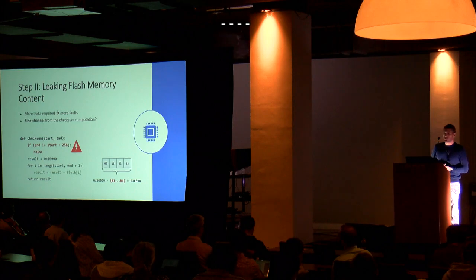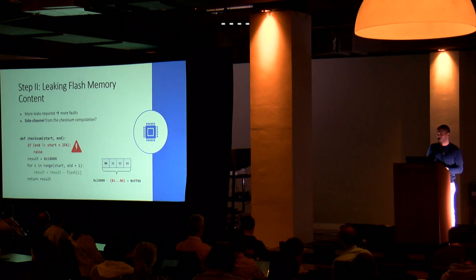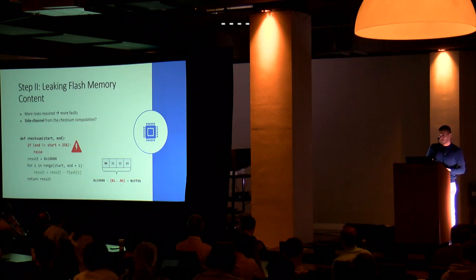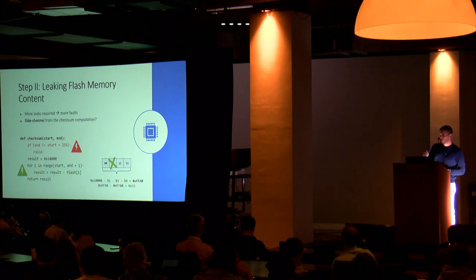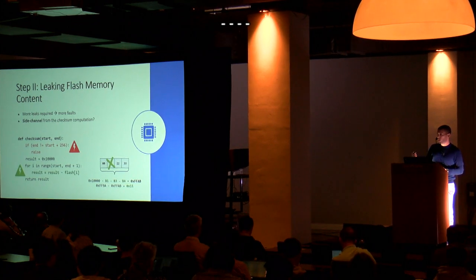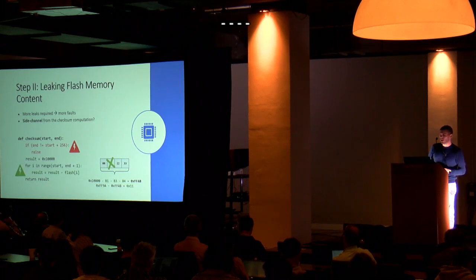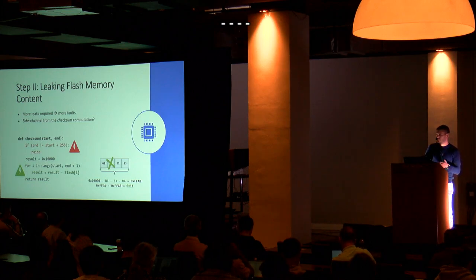To extract individual bytes we needed to create a side channel from the checksum computation, the only function returning a result based on stored memory. The first glitch bypasses the alignment check to run the checksum on four bytes only; the second glitch skips or corrupts the subtraction of just one of the four bytes in the loop. This gives us the sum of three bytes and the sum of four bytes, making it easy to recover the missing one. You might think you just iterate this over all bytes and you're done.